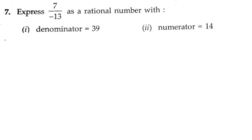Next is the seventh problem. In the seventh problem, they have given the number 7 by minus 13 as a rational number with denominator 39 and numerator 14. So we need to write a rational number in which we need to express the given number as the denominator should be 39.